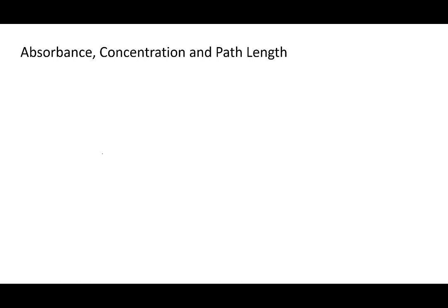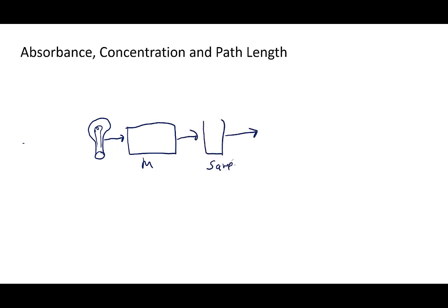Now we'll discuss the relationship between absorbance, concentration of the species in solution, and the path length. Path length is the distance the light travels through your sample. If your sample container is thick, more light is absorbed; if it's thin, less light is absorbed. The path length is the distance by which the light path passes through your sample — normally one centimeter, though you can get cuvette cells with different path lengths.